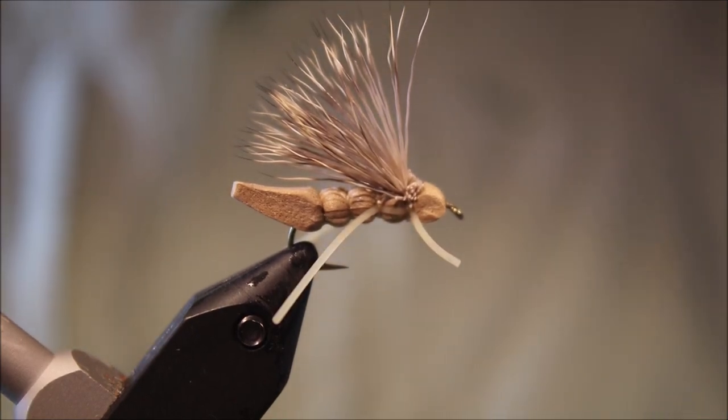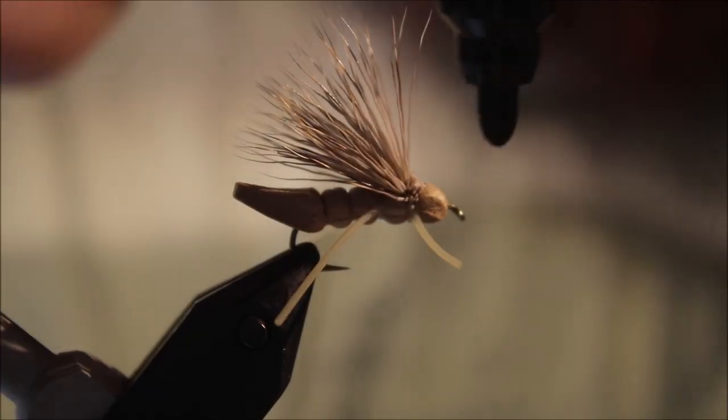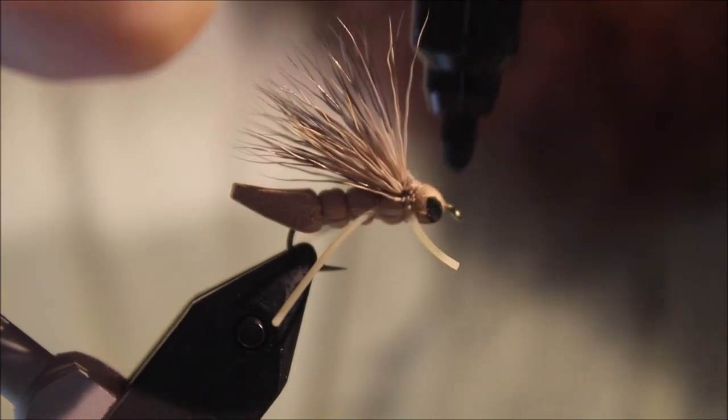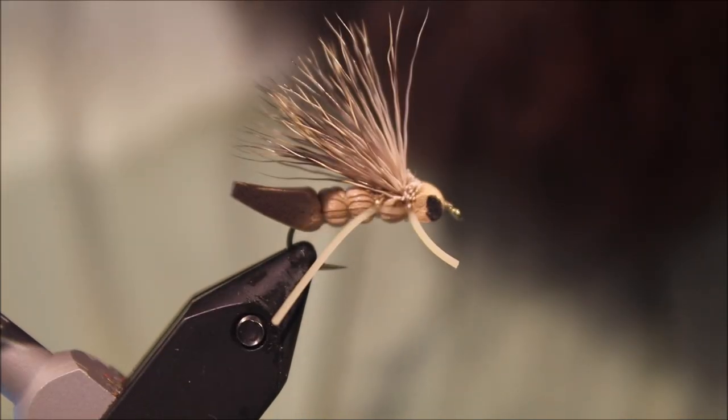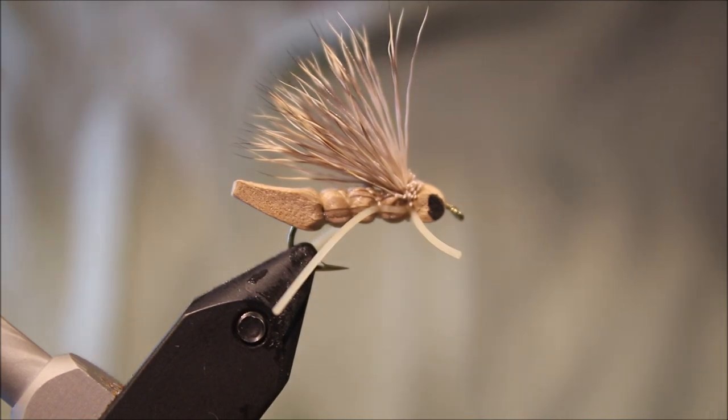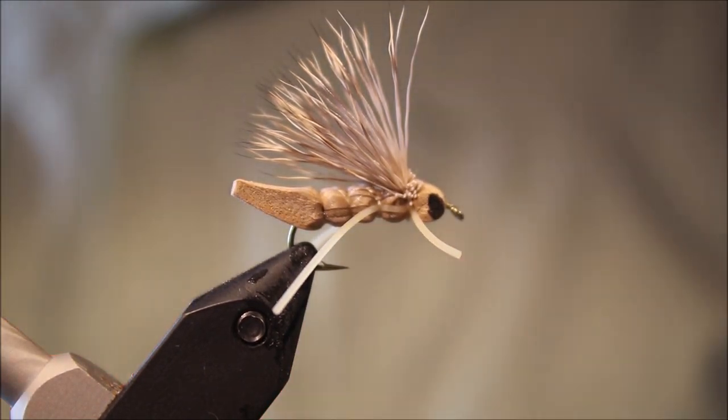And then this pattern calls for eyes. I mean I don't know how much difference it makes, but people seem to like them. So just dot an eye on the front there. And there you have it, that's the Charlie Boy Hopper.